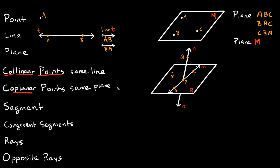Let's go over a quick example. Here we have a plane, and we have a couple of lines drawn. We have line M that is on the plane — on the piece of paper — and then we have line N that runs through the plane, basically like a pencil getting stuck through the piece of paper. Talking about collinear points — they're points on the same line — S, P, and J are collinear because they're on the same line. A couple other collinear points would be Q and P, because they are also on the same line, on line N.